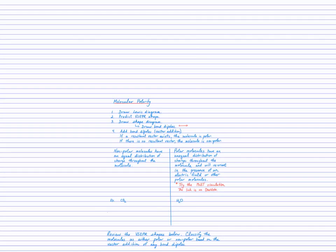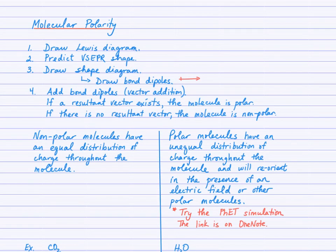Moving on now to molecular polarity. So I have a series of steps here. You, of course, will draw on your prior experience in classifying molecules, but we're going to work with the vector addition of the bond dipoles. That's really what's new now compared to what you've seen in grade 11 or previously. So step one, we're definitely going to draw a Lewis diagram and then use our knowledge of VSEPR theory to predict the shape and draw the shape diagram.